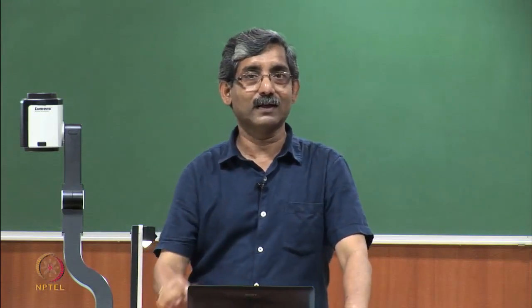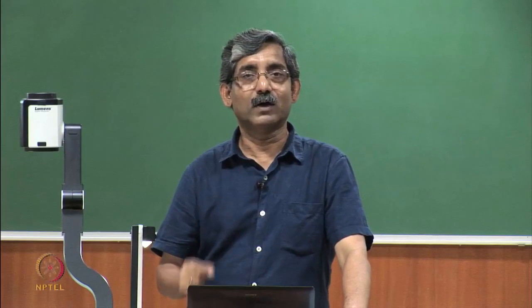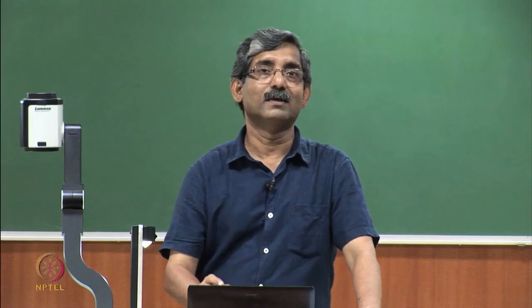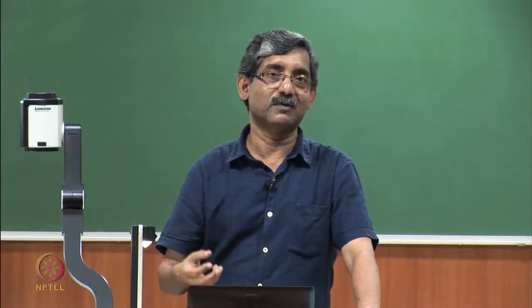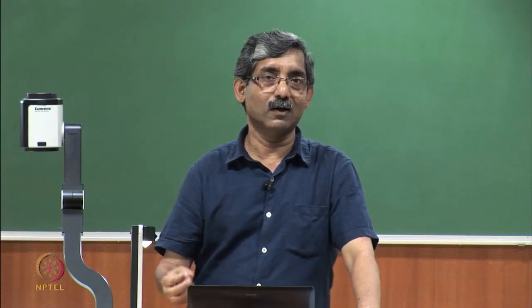Electrical resistance reduces with the increase in moisture content in the presence of moisture in fibre, because water is a good conductor of electricity whereas most textile and polymeric materials are not good conductors of electricity.